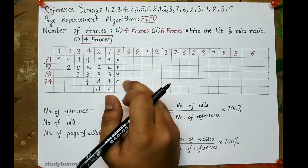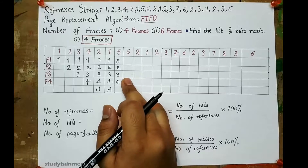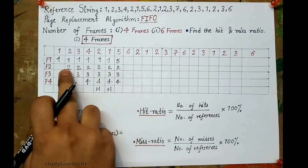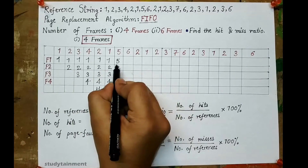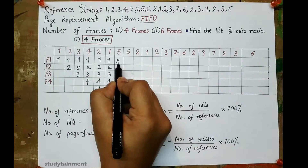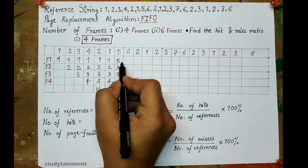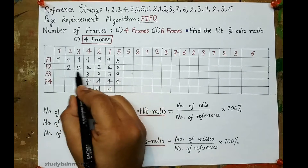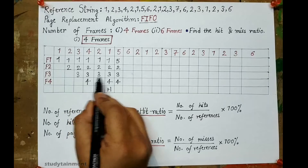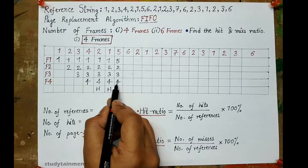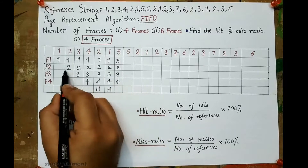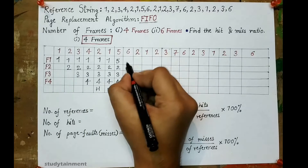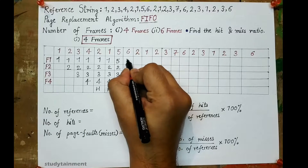Now 6 comes — 6 is also not present in frames 5, 2, 3, or 4, so we need to replace a frame according to FIFO. Page 2 is the earliest one: 5 came just before this step, 2 has been continuously present for 6 steps, 3 for 5 steps, and 4 for 4 steps. So 2 is the oldest and will be replaced with 6.